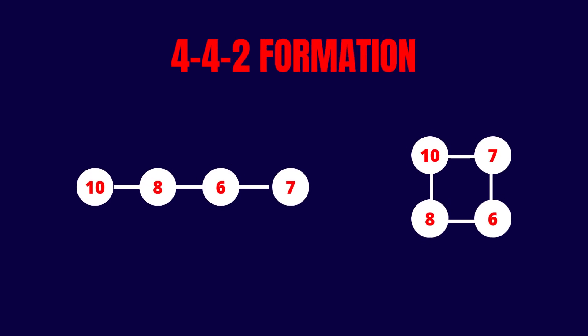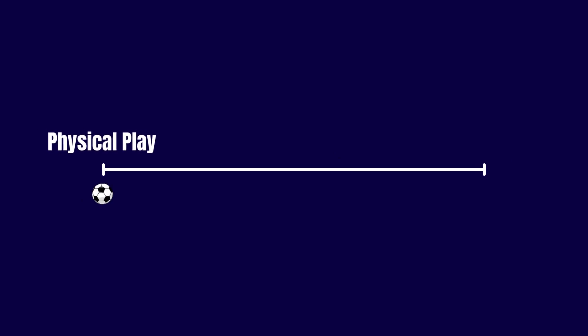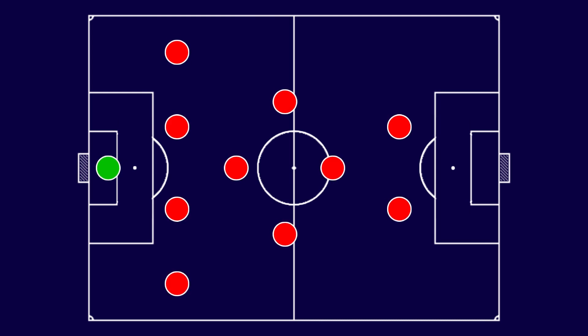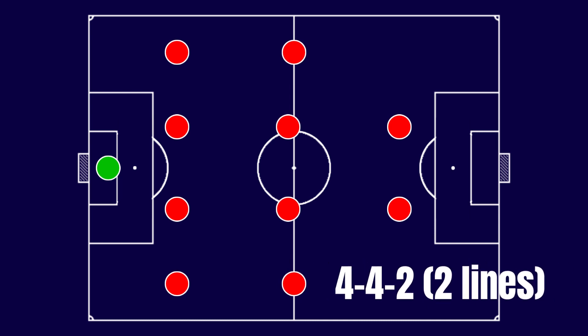There are many ways to use the 4-4-2 formation, from the midfield shape to variations in approach, offensive or defensive. The use of the 4-4-2 has undergone several changes throughout history. There are various configurations: the 4-4-2 with a diamond in the midfield (also called 4-3-1-2), the one with a square in the middle (also known as 4-2-2-2), characteristic of Brazilian football, and the traditional one with two lines of four, which we will focus on in this video as it is the most commonly used 4-4-2 formation in the world today.